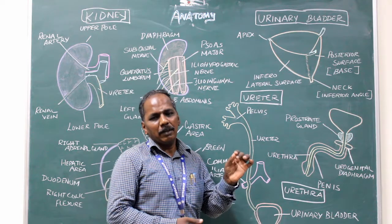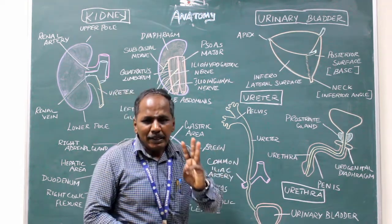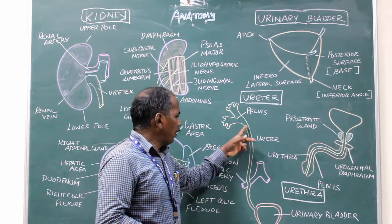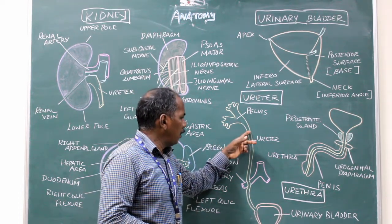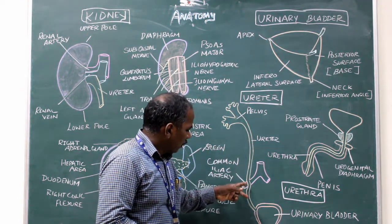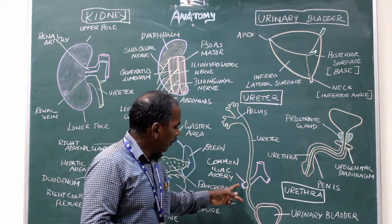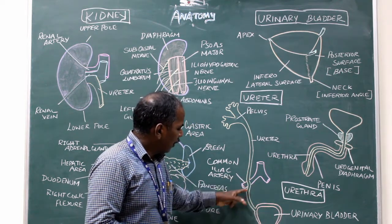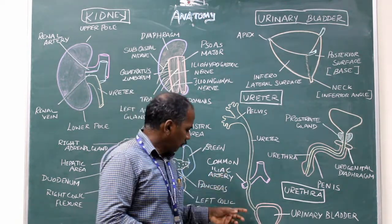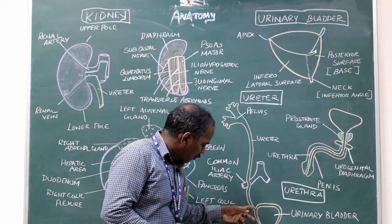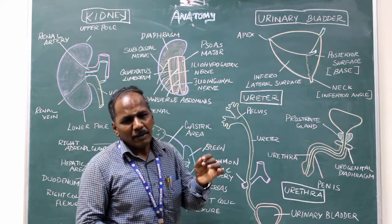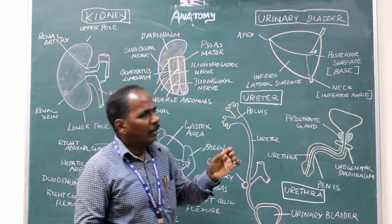Constrictions of the ureter. It has three constrictions. Number one, at the pelviureteric junction. Number two, where it crosses the common iliac artery. Number three, just before it enters the urinary bladder. These are the places where constrictions are present in the ureter.